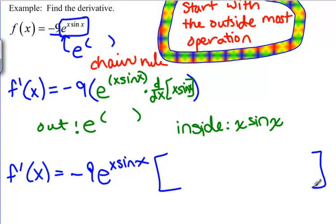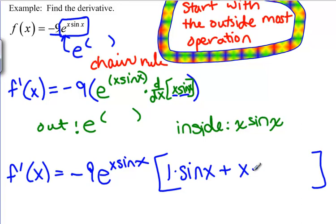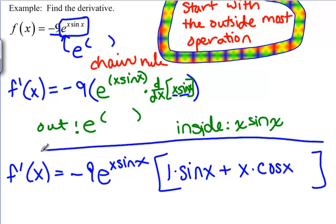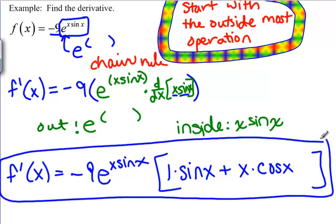So we have f prime of x is negative 9 e to the x sine x, followed by the derivative of x sine x. To find the derivative of x sine x, we use the product rule because it's x times sine x. The derivative of the first — the derivative of x is 1 — times the second unchanged, so that's sine x, plus the first unchanged, so that's x, times the derivative of the second, which is cosine x. That whole thing is the derivative of e to the x sine x times negative 9.